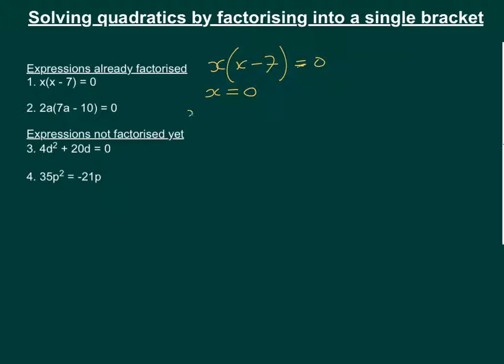So x minus 7 equals 0, in which case x would equal 7. So we have two results here, either x equals 7 or x equals 0.